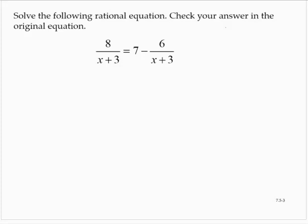Solve the following rational equation. Check your answer in the original equation. 8 over x plus 3 is equal to 7 minus 6 over x plus 3.